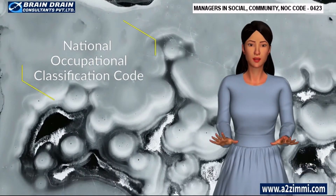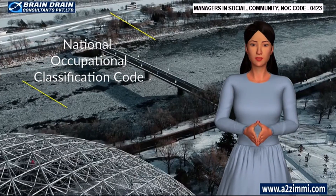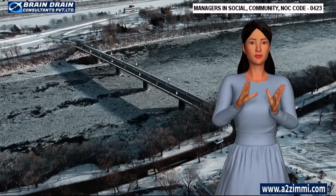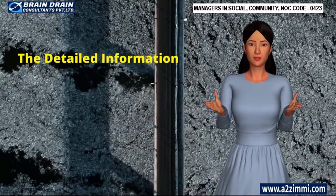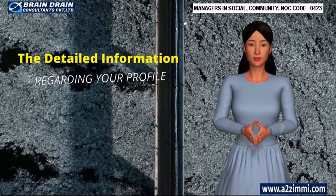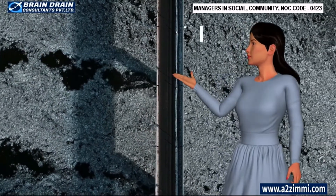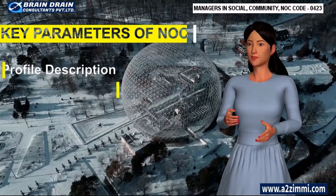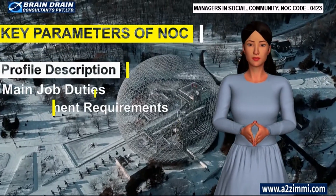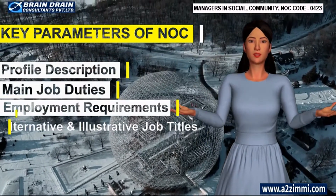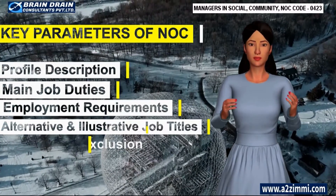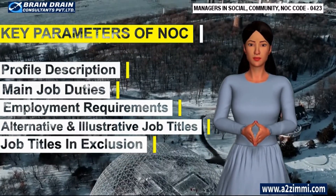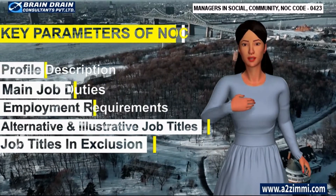In Canada, every skill profile has a unique code that is called National Occupational Classification Code or NOC code. This code tells us about the detailed information associated with the profile and regarding the key parameters like profile description or profile lead statements, key responsibility area and DEMP, main job duties, employment requirements, and alternative and illustrative job titles.